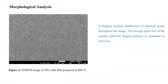For morphological analysis, the FESEM image of the TiO2 thin film prepared at 400°C is demonstrated. It displays uniform distribution of identical grains throughout the image. The average grain size of the pseudo-spherical particles is estimated as 22 ± 2 nanometers.